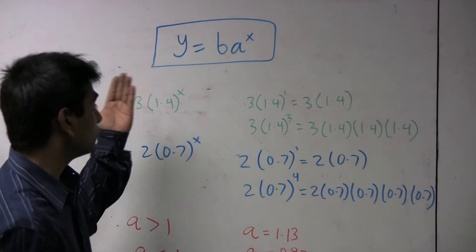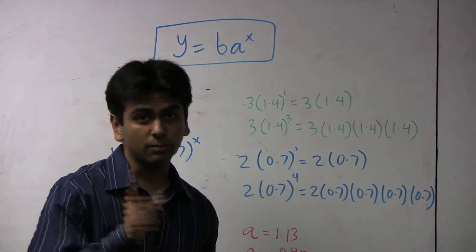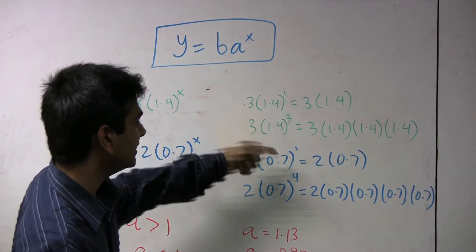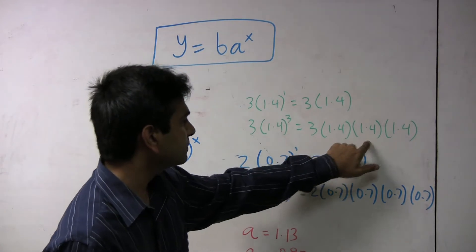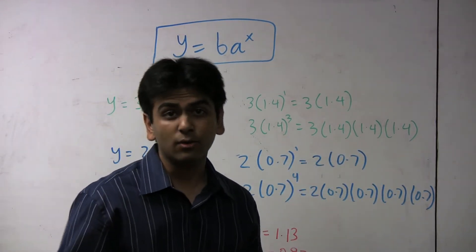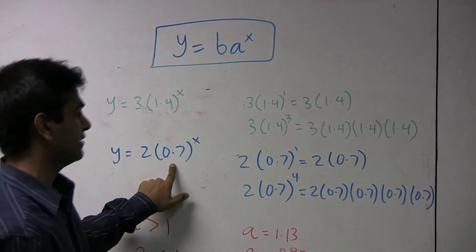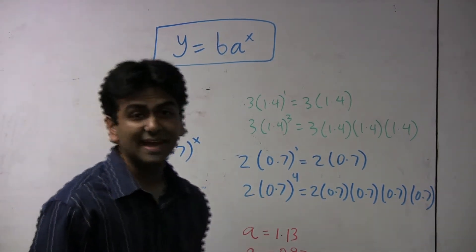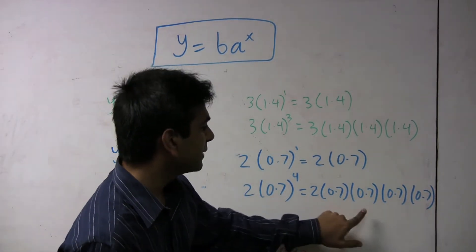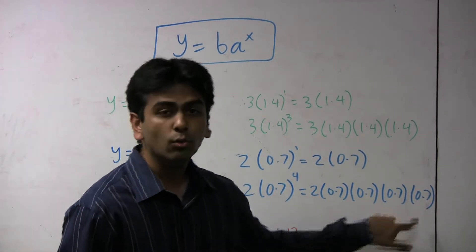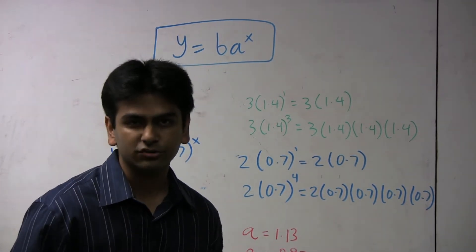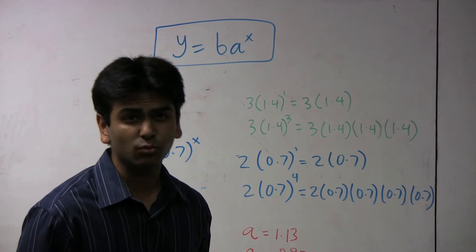What if we take a to be 1.4, which is more than one? What happens as x goes up from, say, one to three, is the function pretty much gets multiplied by a number that's bigger than one many times. Clearly it's going to go up. But if we choose an a value that's less than one, for example, point seven, then as x goes up from one to, say, four, then the function is being multiplied by a number that's less than one, which will make the y value smaller. This is why exponential decay functions are functions where a is less than one.